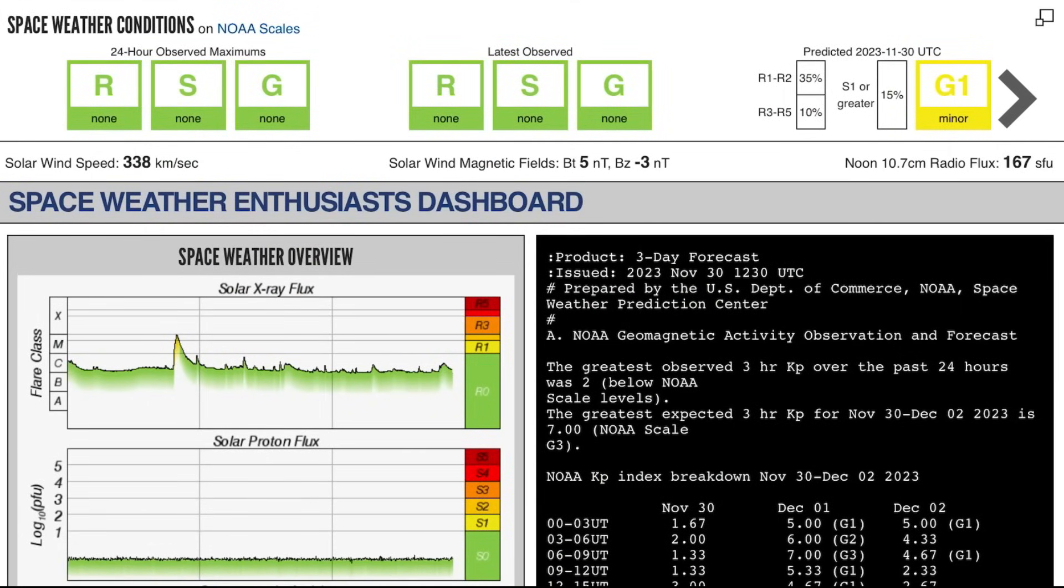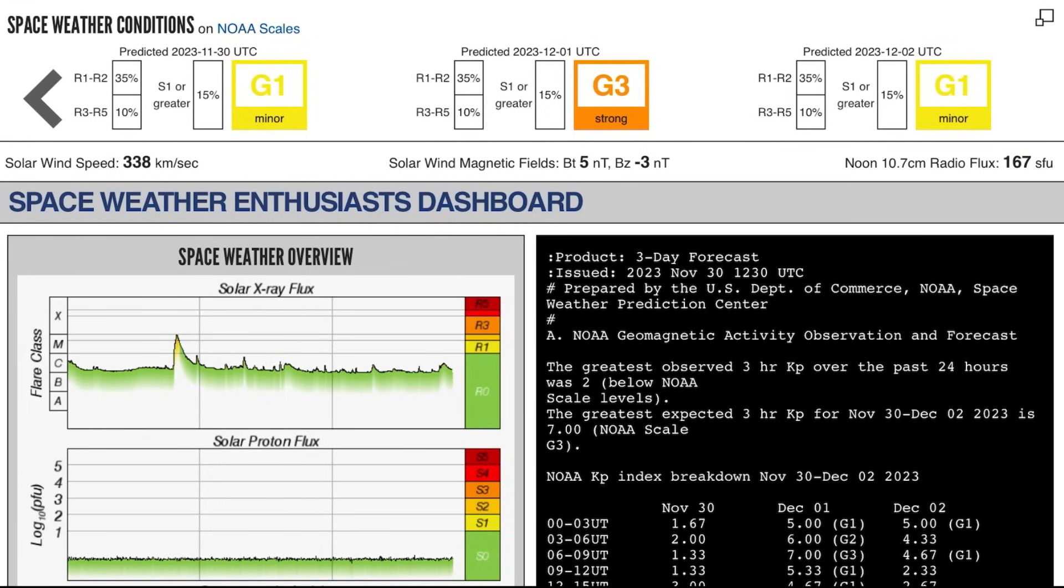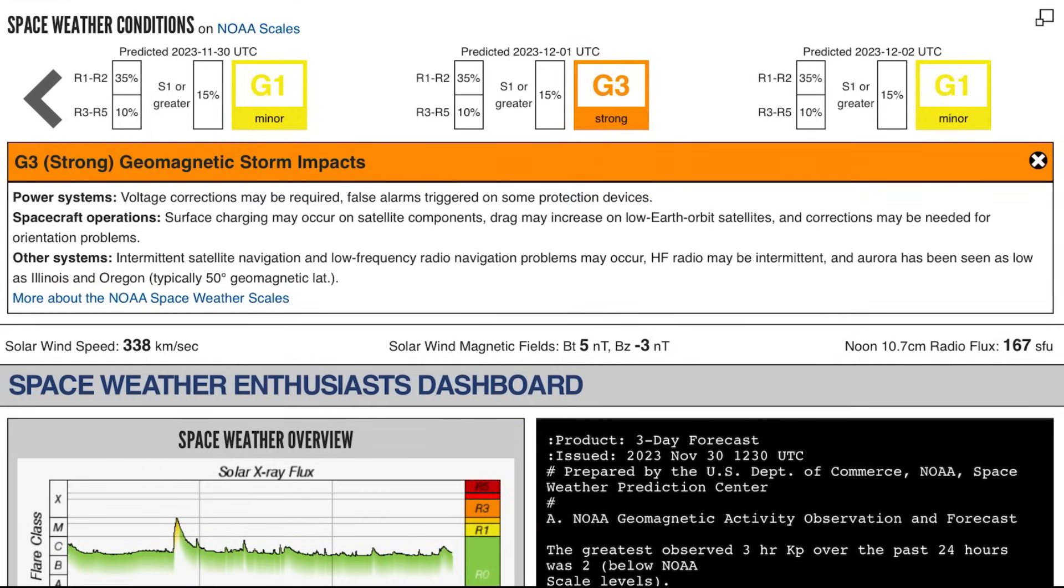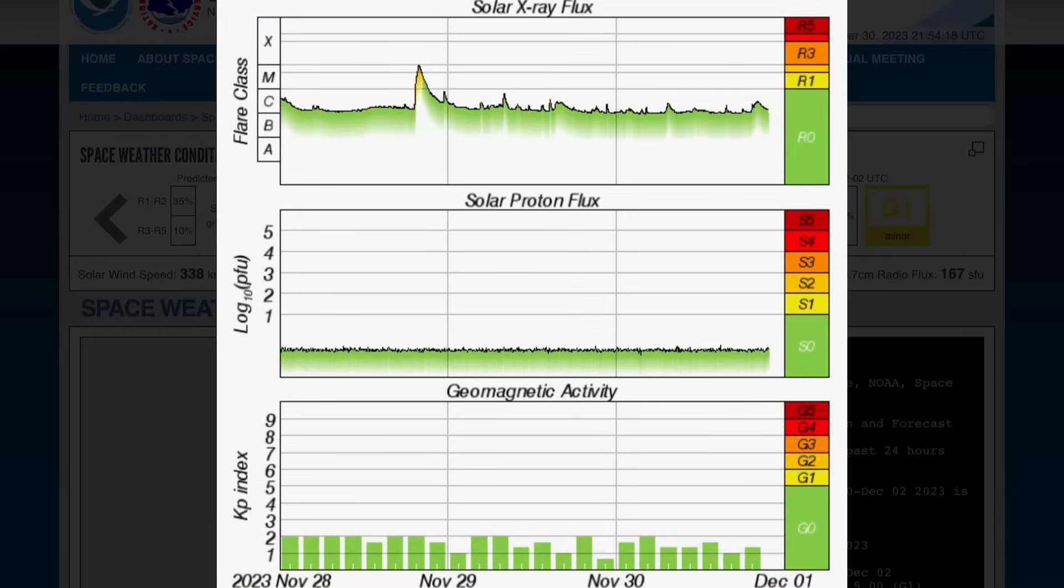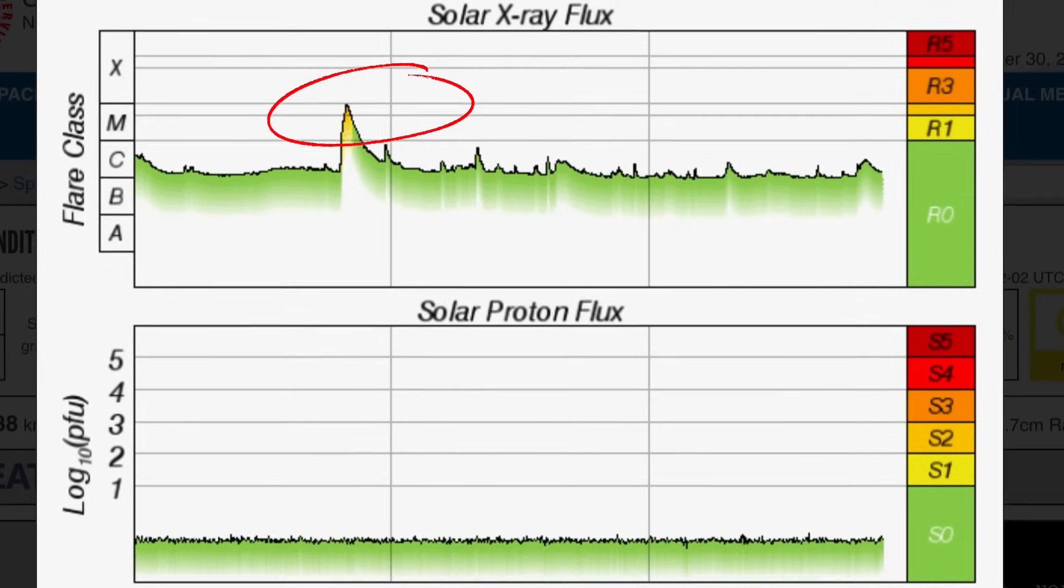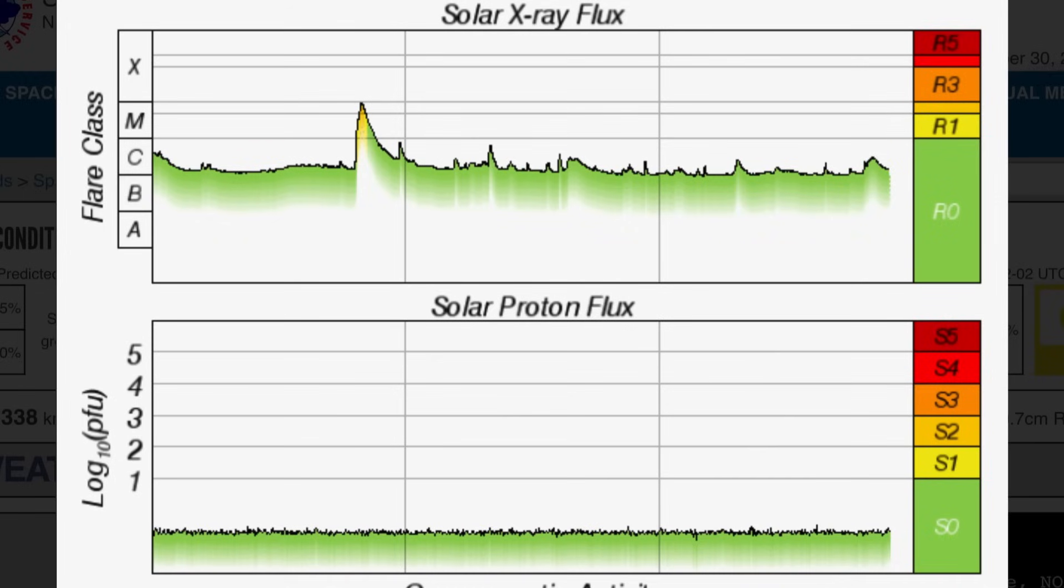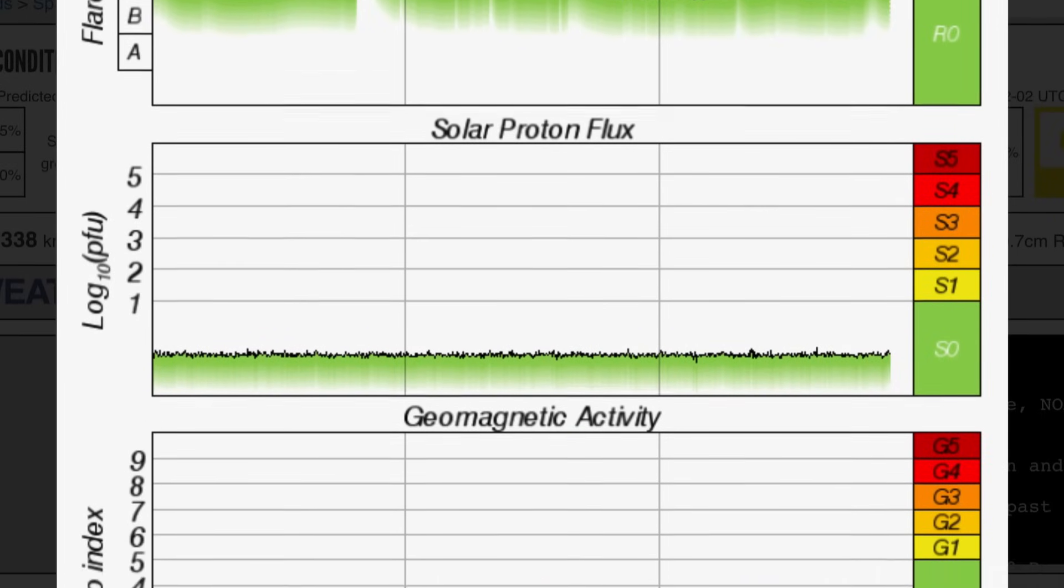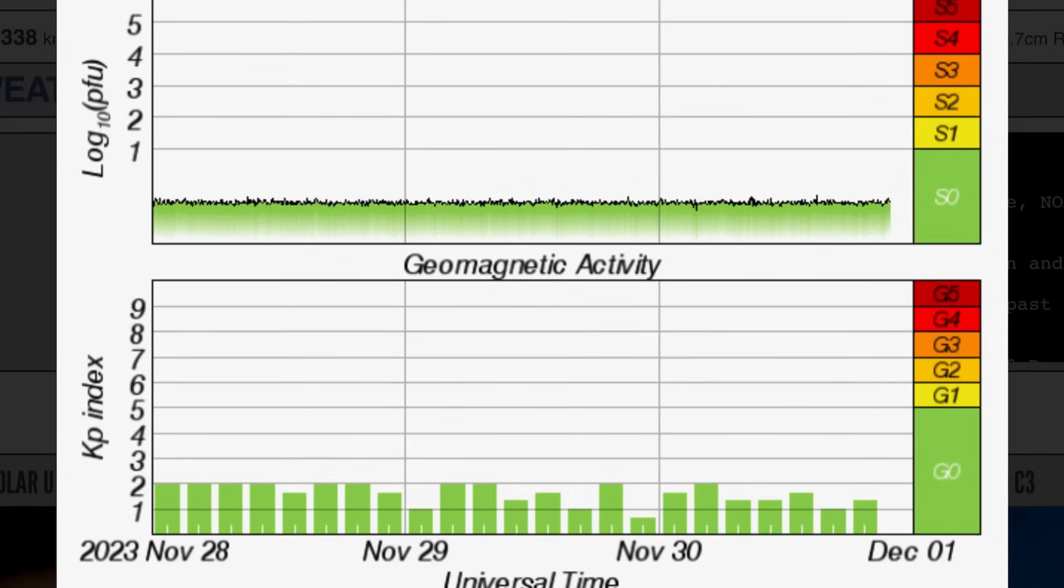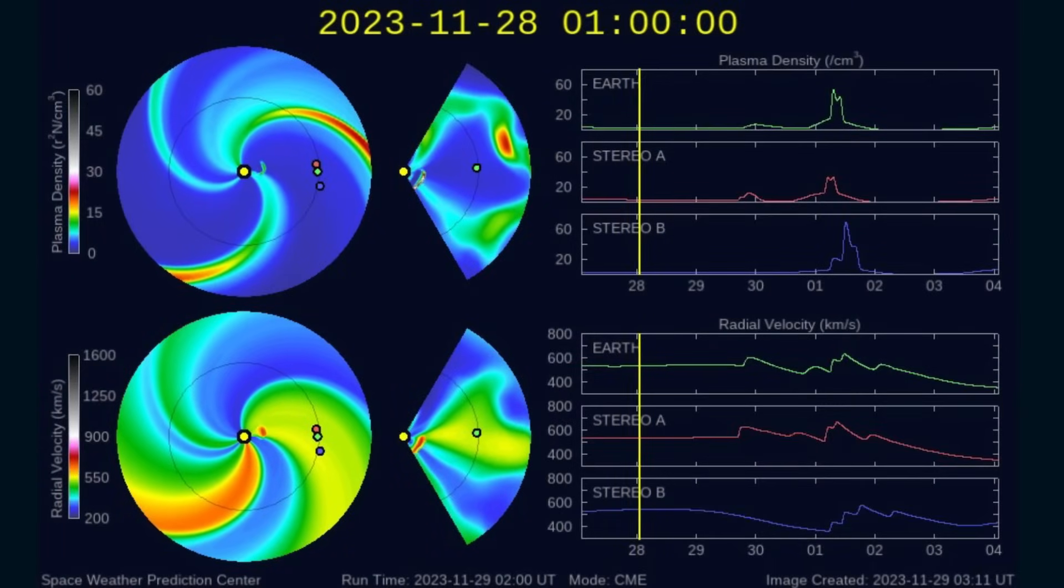Space weather conditions currently, there are none. That's right, currently no space weather conditions. As you can see here, predicted for the 1st of December, G3 strong geomagnetic storm impacts are expected. Voltage corrections, electronic systems may be affected. Current winds are coming in at 338 kilometers per second. Solar X-ray flux still only showing that strong M-class solar flare, and just recently a long-duration C-class solar flare. Geomagnetic activity low at Kp1.